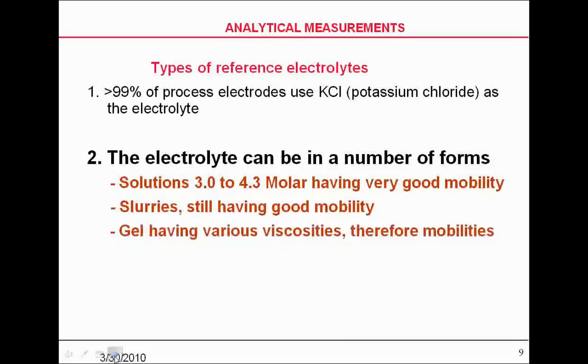In our industrial probes, we use a gel of potassium chloride because it has good viscosities, and its mobility, while good enough to make the measurement, is in a gel form so that it's slow to migrate into the system.